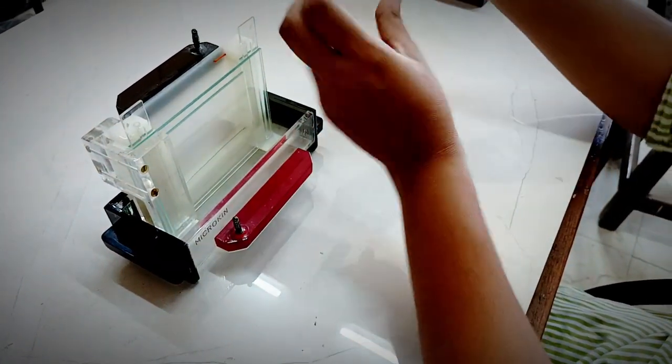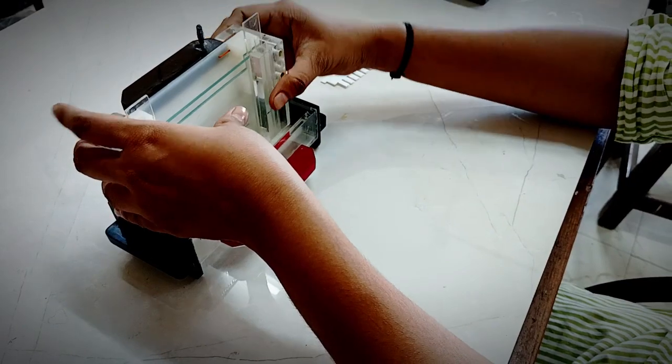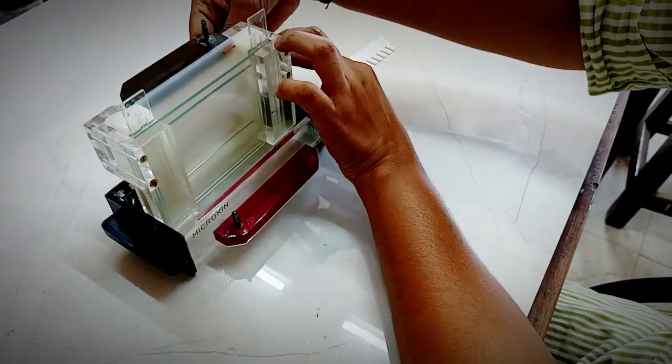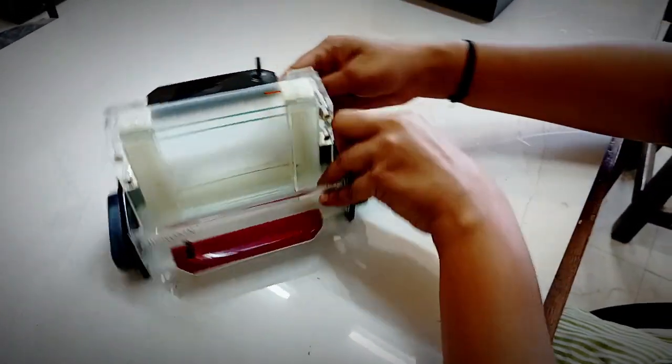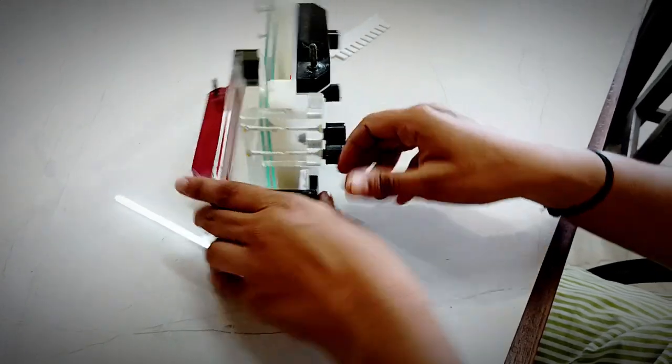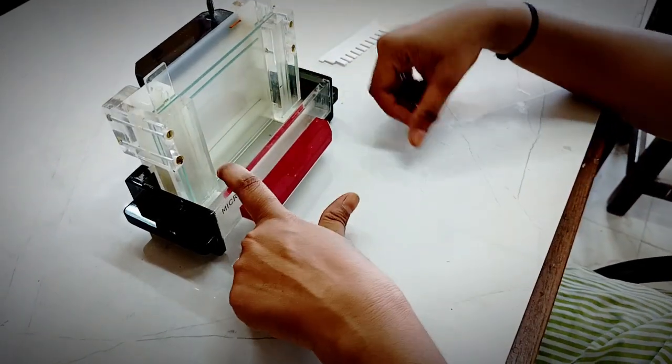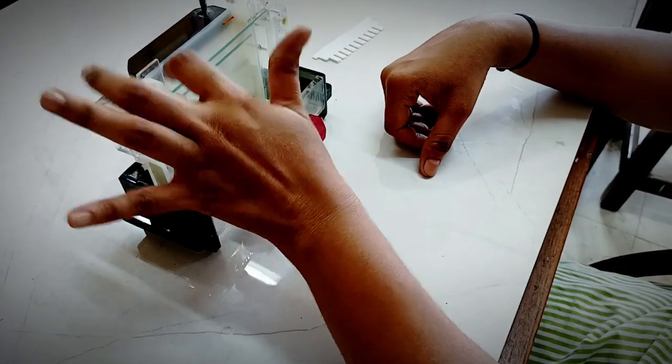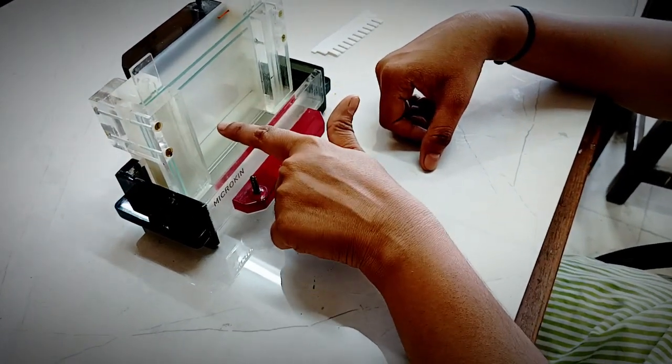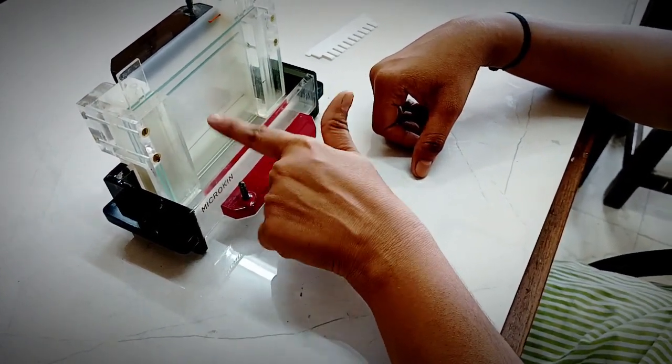Now similarly, on the other side also, you are going to place this and fix it. You have to make the screws tight. Now here you will add tank buffer, here also you will add tank buffer, and in between the glass plates, you will add the polyacrylamide gel.